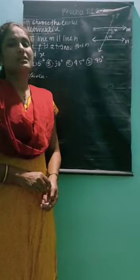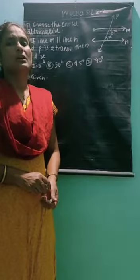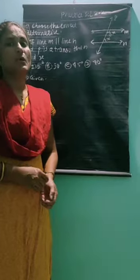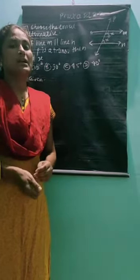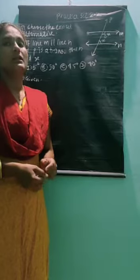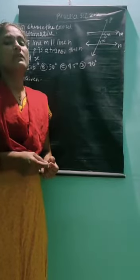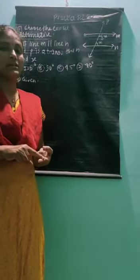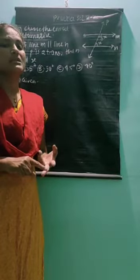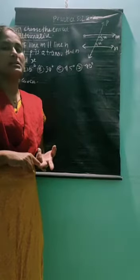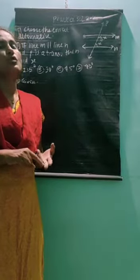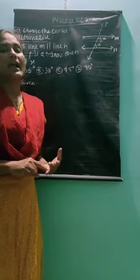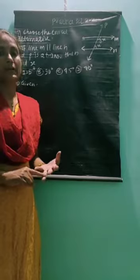Good morning students. Yesterday we learnt properties of two parallel lines and their transversal. When two parallel lines and one transversal are given, the pair of corresponding angles are congruent, the pair of alternate angles are also congruent, and the pair of interior angles are supplementary.